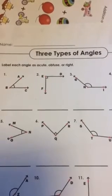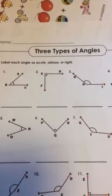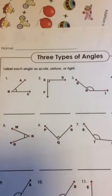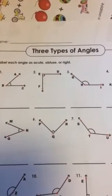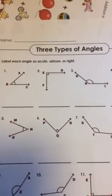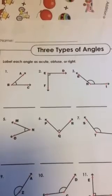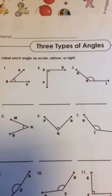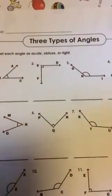We're going to review the three types of angles. We're going to label each one as acute — smaller than right — obtuse — bigger than right — or the right angle itself.